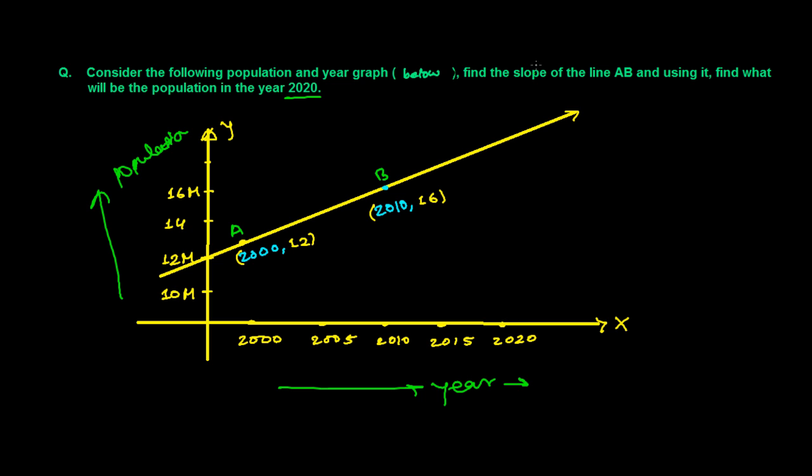And now we need to predict what will be the population in the year 2020. What will be the population? Let's say M. M will be the population. M means I don't know how many millions it is. We need to find out that.